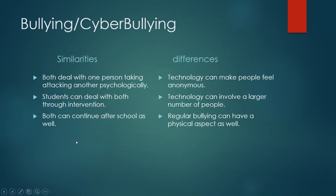Some similarities between bullying and cyberbullying: both deal with one person attacking another psychologically. Students can deal with both through intervention. Bullying and cyberbullying, although often associated with schools, can occur after school, in workplaces, and after work. Because of the digital component, we are so connected to our devices that it's hard to disconnect, making us much more prone to cyberbullying and instances of harm. Technology can make people feel anonymous and can involve a much larger number of people — sometimes thousands or even millions depending on the viral nature of the bullying.